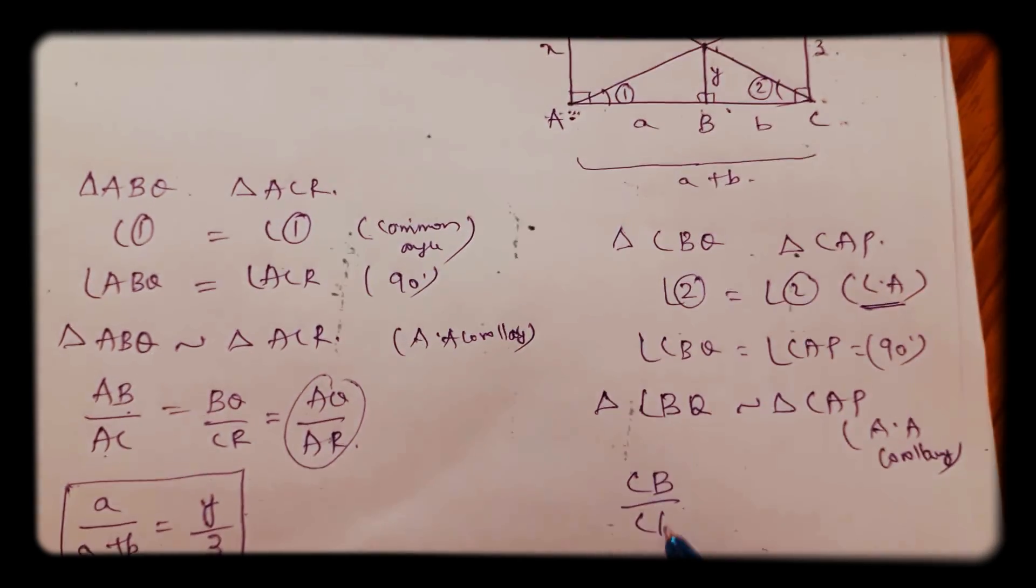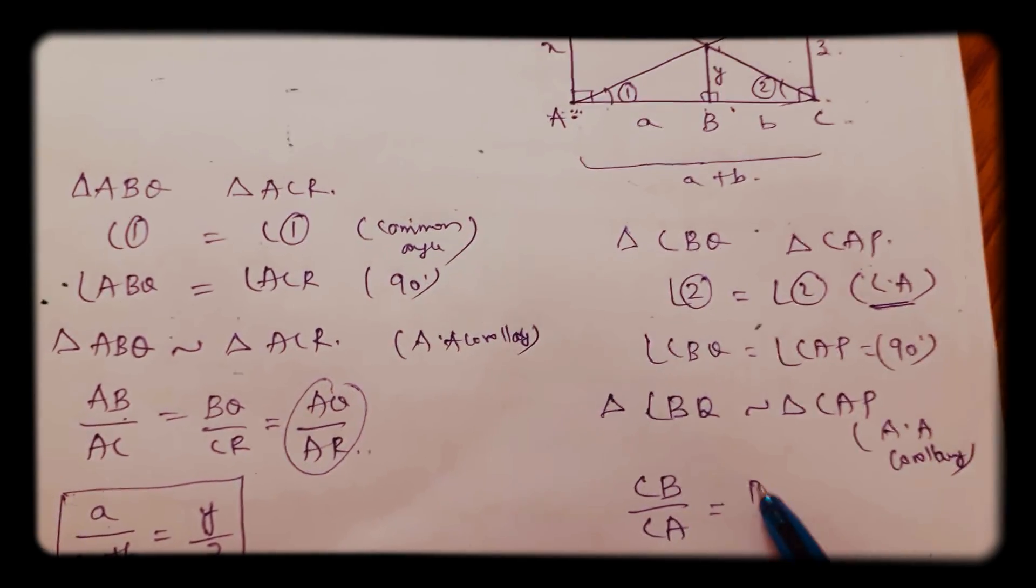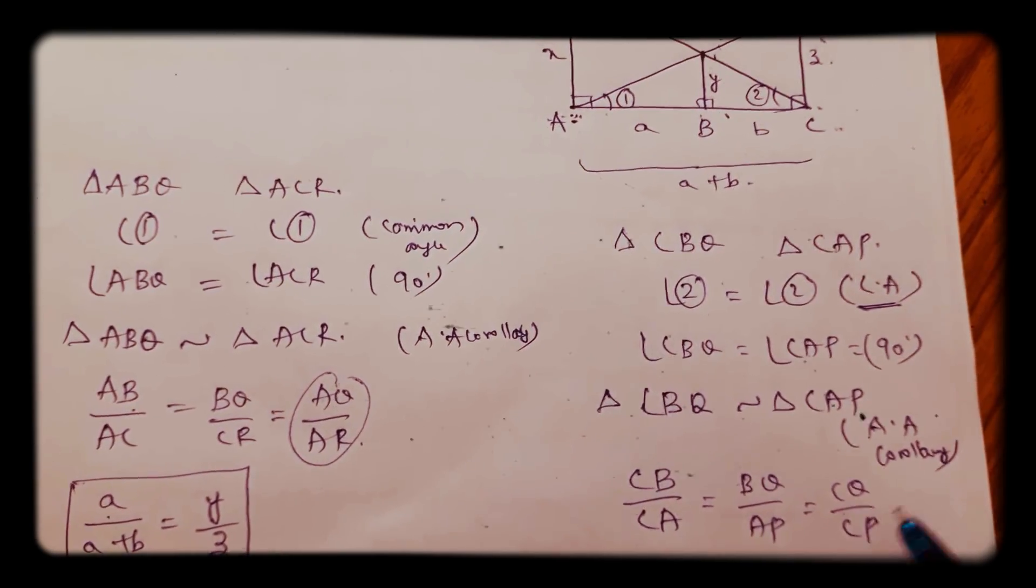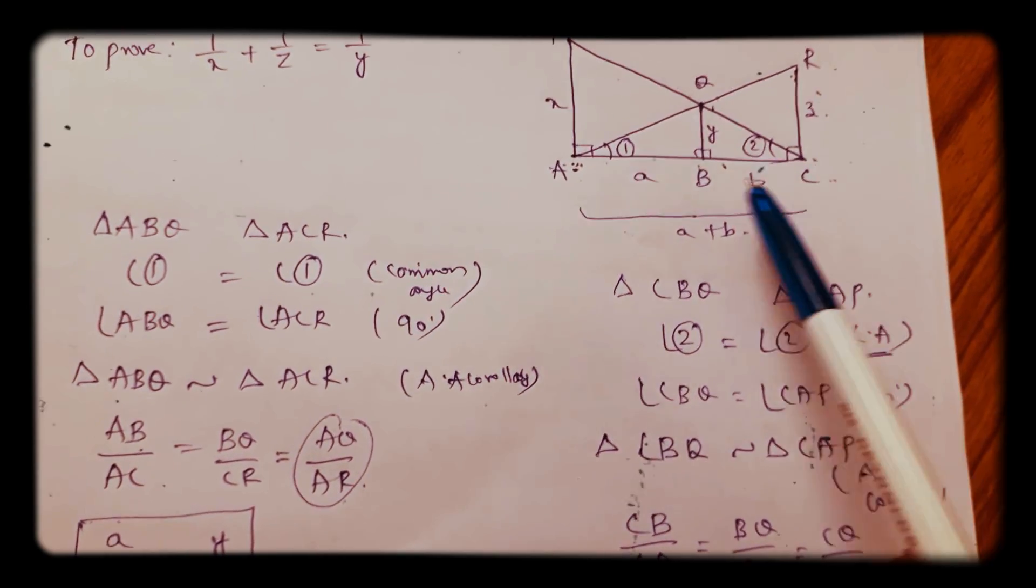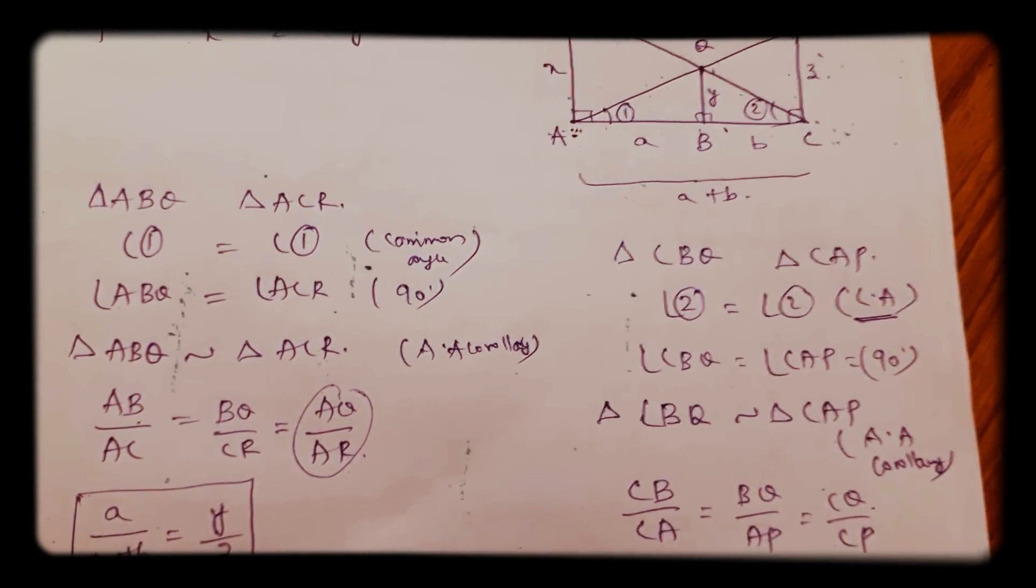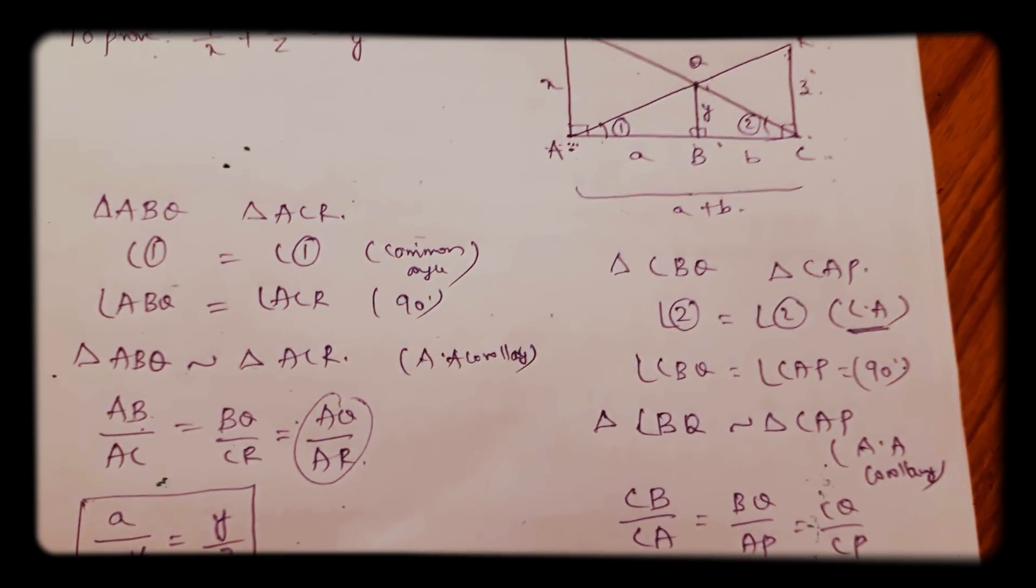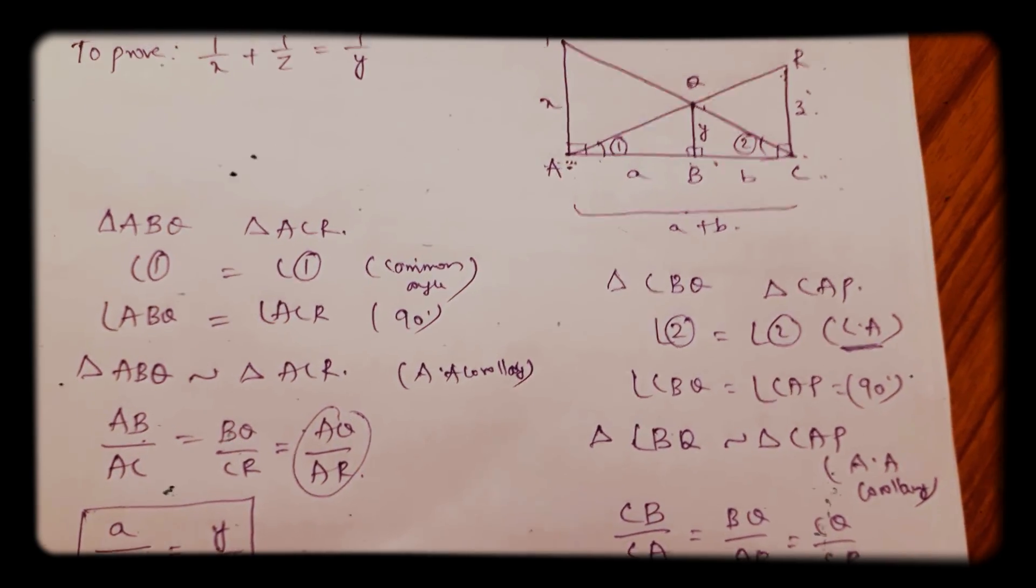Now if you see the diagram, what is CB? CB is B. CA is B + A. BQ is Y, and AP is X.